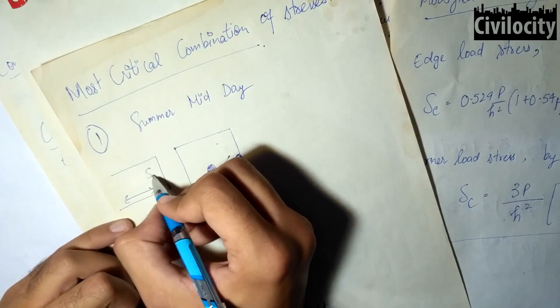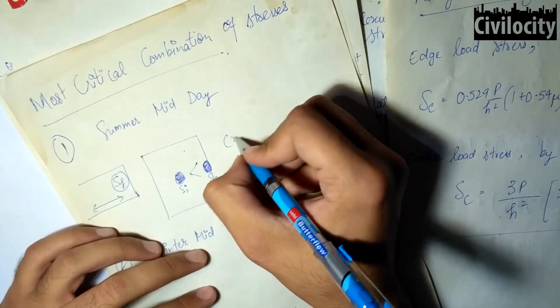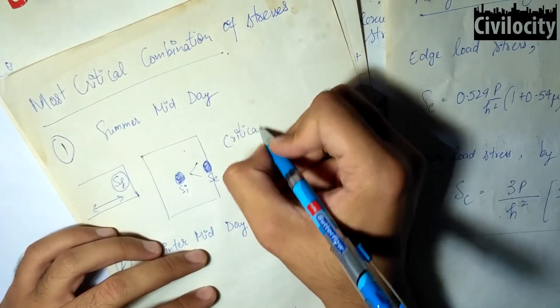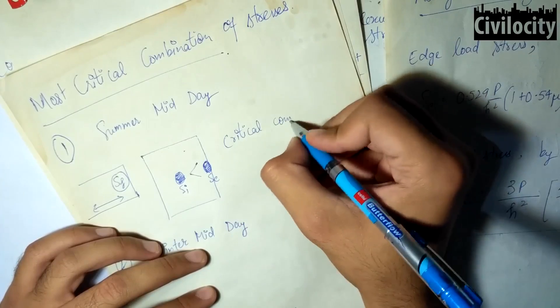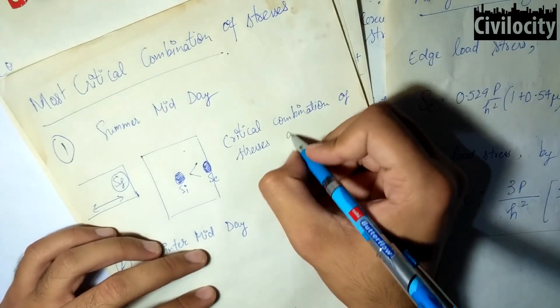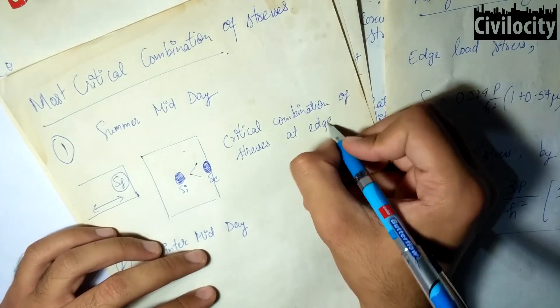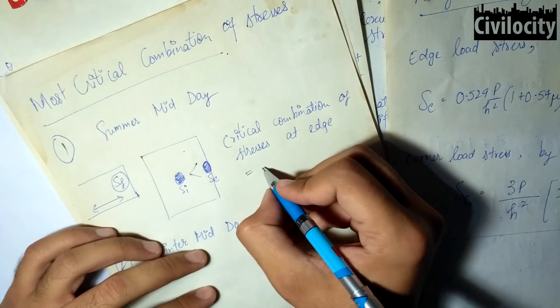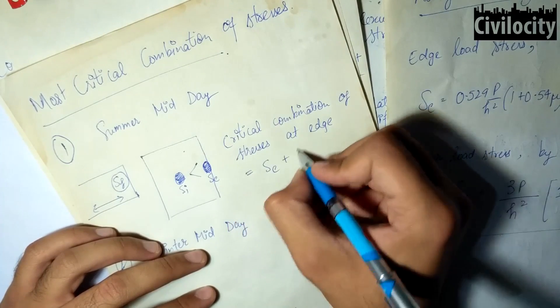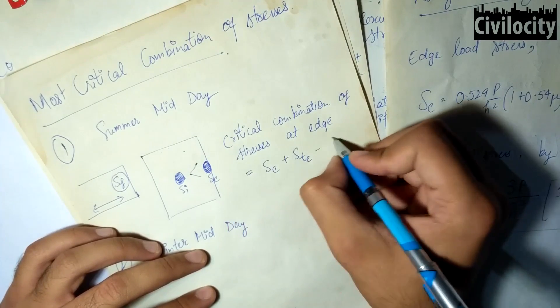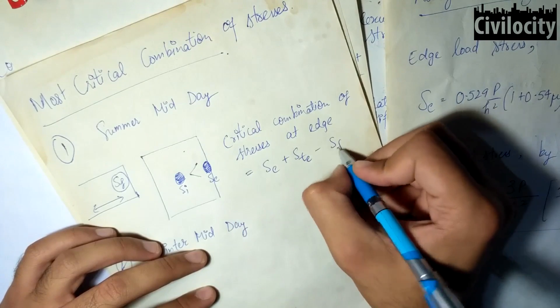The frictional stress is compressive due to expansion in summers and its magnitude is relatively less. So the critical combination of stresses at edge is given as load stress plus warping stress minus the frictional stress, that is SE plus STE minus SF.